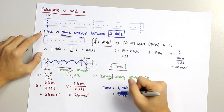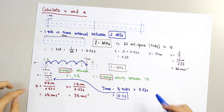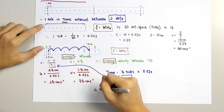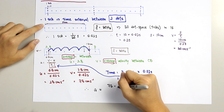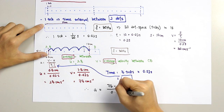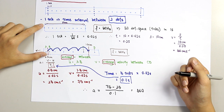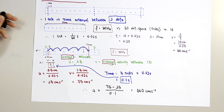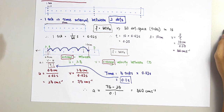Substituting into the formula: acceleration A = (75 − 25) ÷ 0.1 = 500 cm per second squared. Don't forget the unit — centimeter per second squared. That's all for calculating velocity and acceleration. For the next lesson, I will talk about ticker tape charts. Stay tuned.